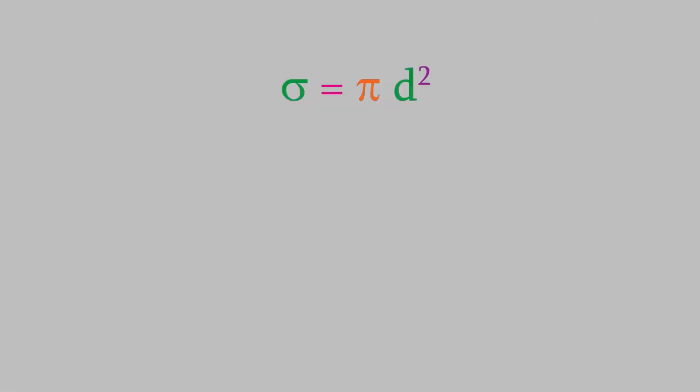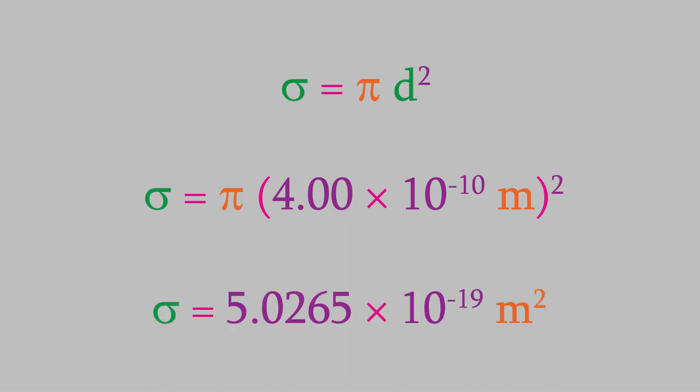We want the units to be SI units, so we should convert angstroms to meters, which gives us 4.00 times 10 to the minus 10 meters. When we plug this into the formula for the collision cross section, we get sigma equals 5.0265 times 10 to the minus 19 meters squared.